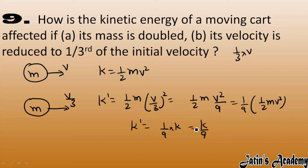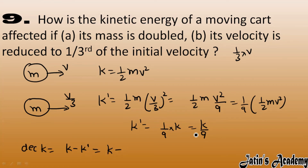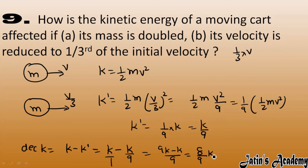Here kinetic energy decreases. Decrease in kinetic energy = initial KE minus final KE = K minus K/9. Taking LCM: (9K − K)/9 = 8K/9. So the decrease in kinetic energy is 8/9 of the initial kinetic energy.